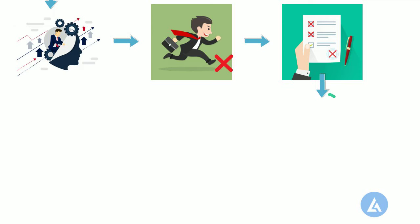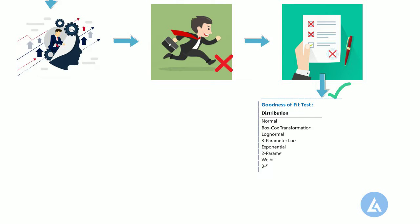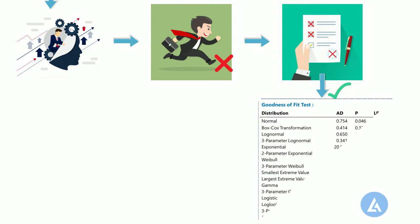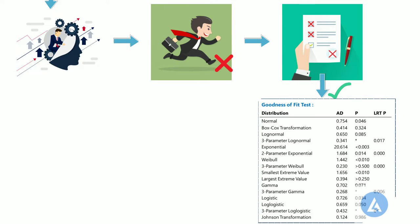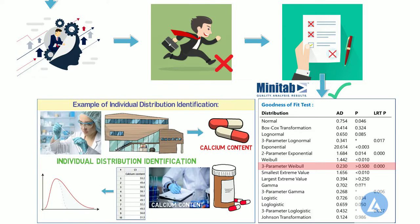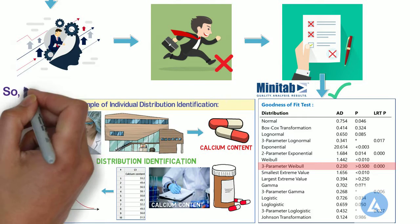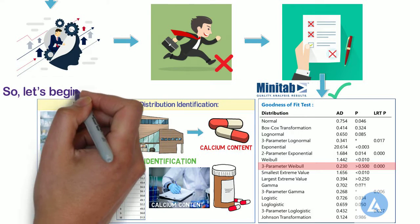To avoid this, from now onwards we are going to learn Individual Distribution Identification — to identify the best distribution or transformation for your data before you perform an analysis in Minitab software, with the help of a practical example for easy understanding and better clarity. So let's begin.